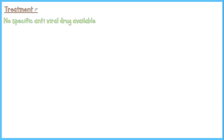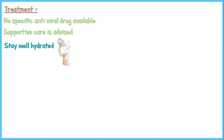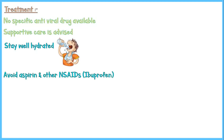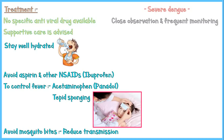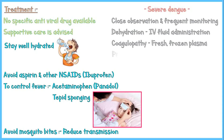Unfortunately, there is no specific antiviral drug available to treat dengue. Supportive care is advised to reduce signs and symptoms. Patients should stay well hydrated to prevent dehydration caused by vomiting and high fever. Aspirin and other NSAIDs like ibuprofen should not be used to reduce fever due to their anticoagulant properties; acetaminophen and tepid sponging are indicated for fever control. Patients should also avoid mosquito bites to prevent transmission. For severe dengue, close monitoring is required to prevent hypovolemic shock. IV fluid administration may be needed for dehydration, fresh frozen plasma is given for coagulopathy, and prophylactic platelet infusion is not beneficial as it can cause fluid overload.